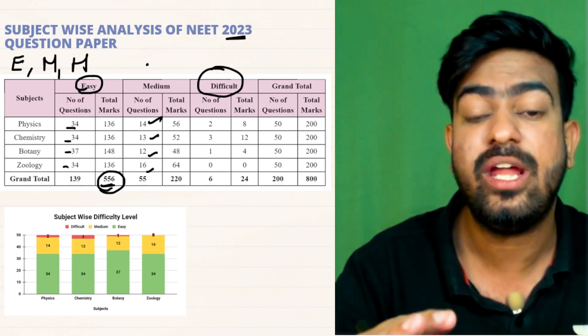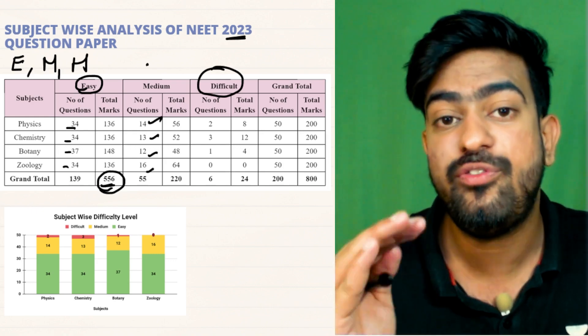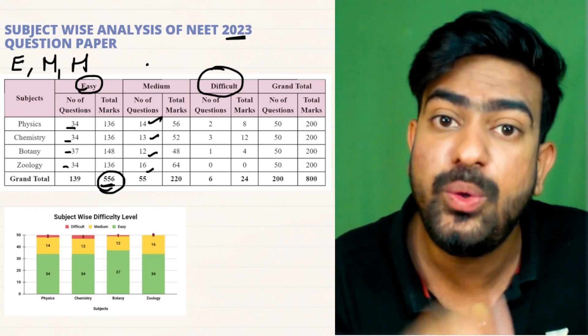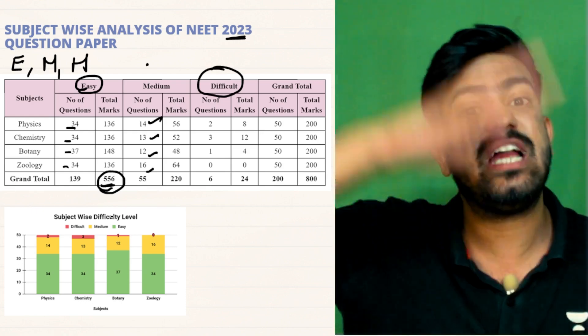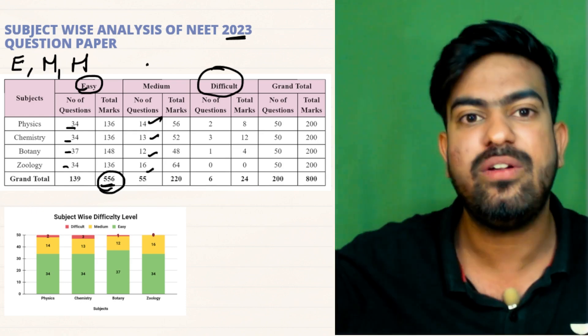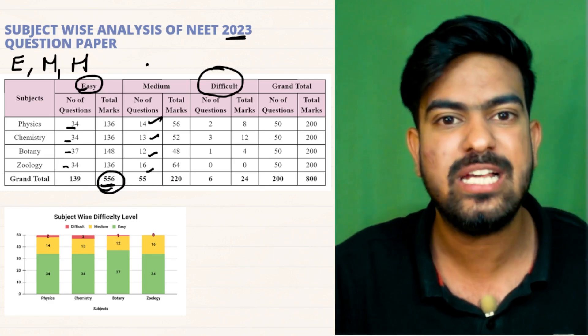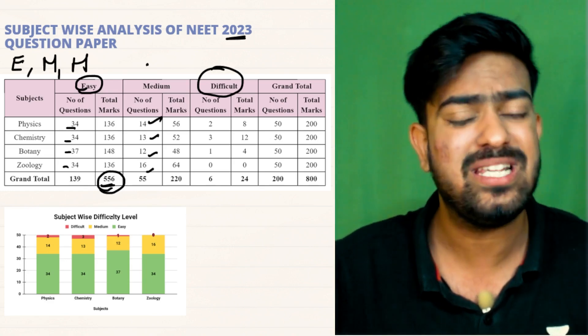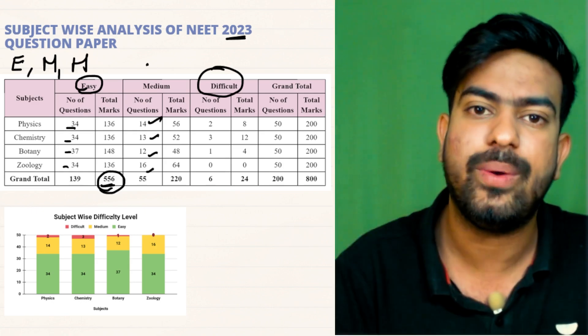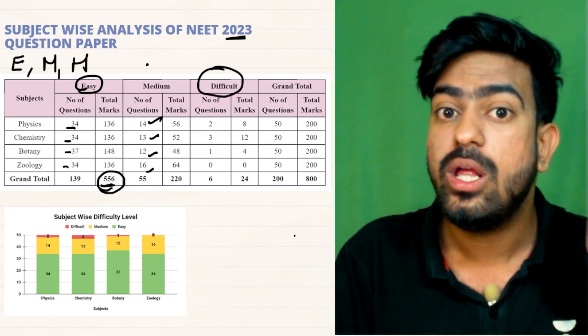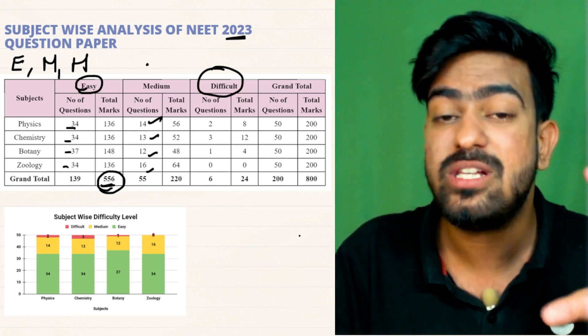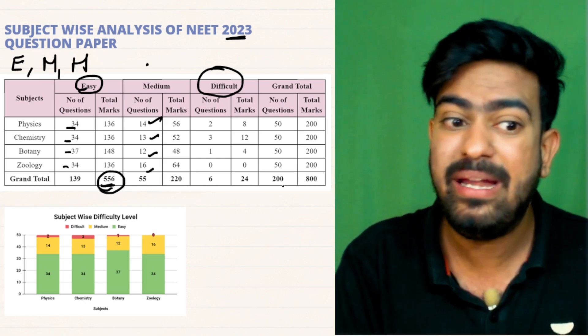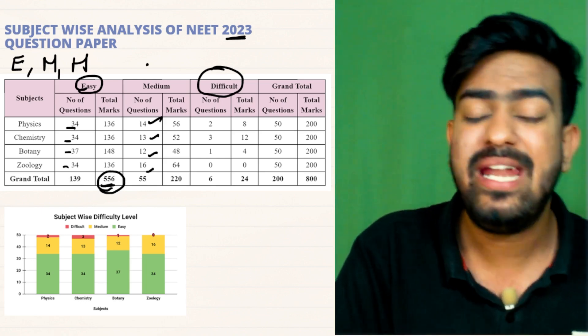First of all secure your these marks, 556 marks, 600. First of all secure and then think about the preparation for the hard questions. This is what you need to follow. What we do is that we start solving HC Verma, we start solving DC Pandey and we ignore NCERT. And if you are not doing the basics, then how are you able to go and solve the hard questions? So think about it and prepare yourself accordingly. First easy, then medium, then hard.